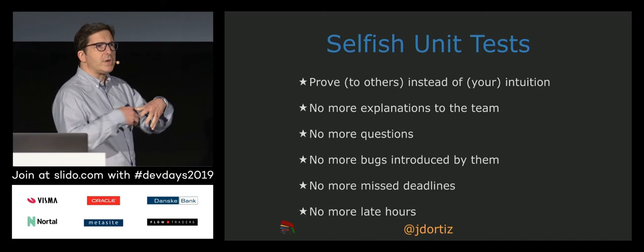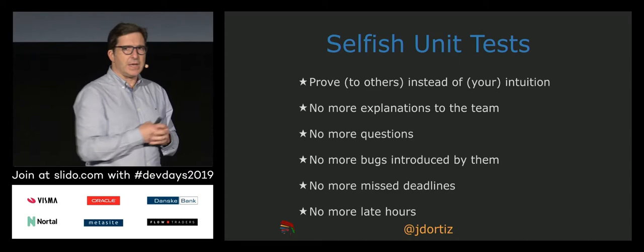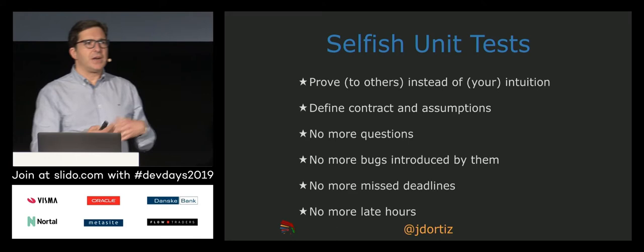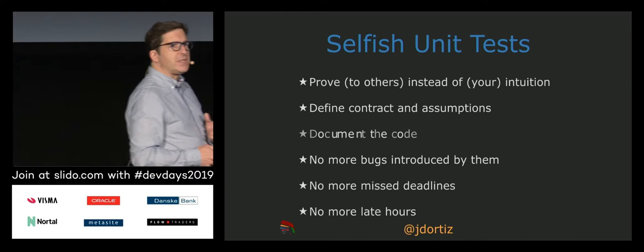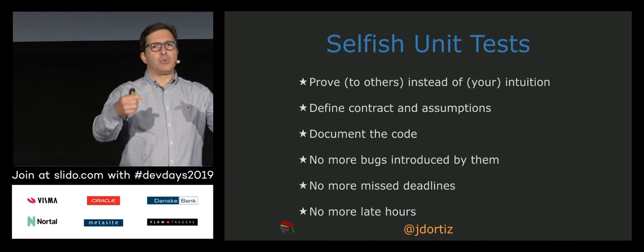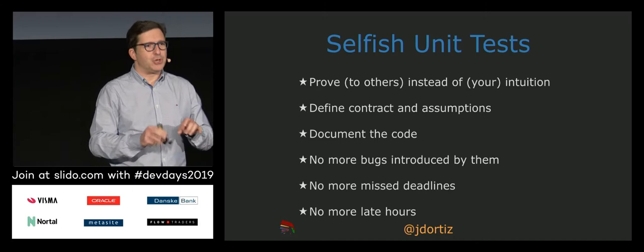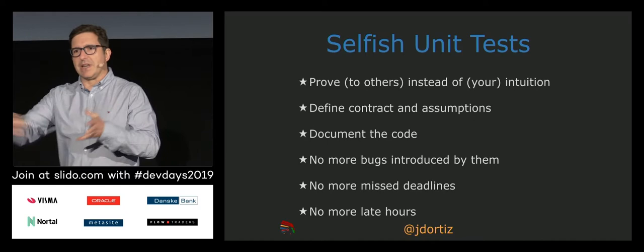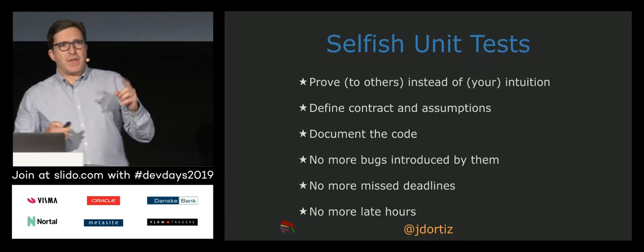The second thing that is very important is what does my code apply properly — why is it right for this scenario and not right for these others? All these assumptions and all these contracts are defined in the tests. I would say that all the documentation that you have in your tests is the documentation that you need. And this is the documentation that we, as developers, are happier writing, because let's be honest, I don't think you enjoy writing HTML comments inside your code that get translated into documentation for the rest of the world.